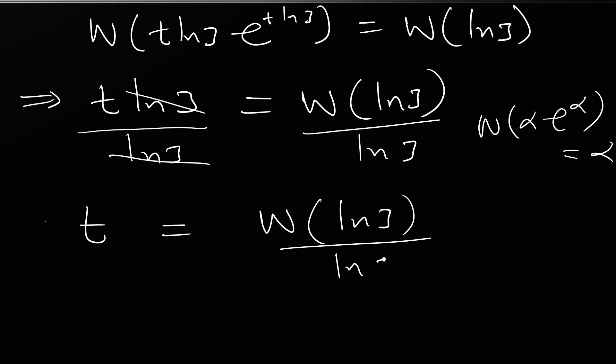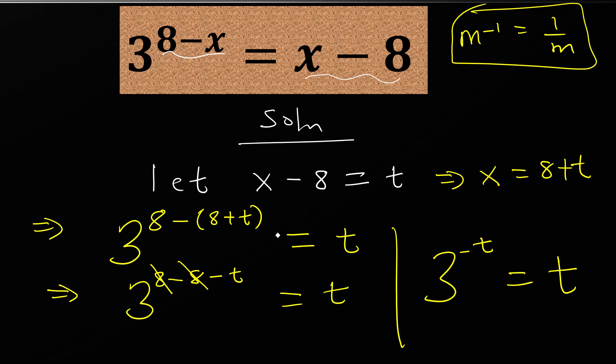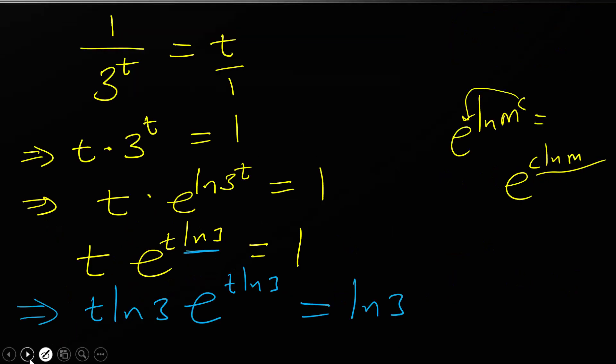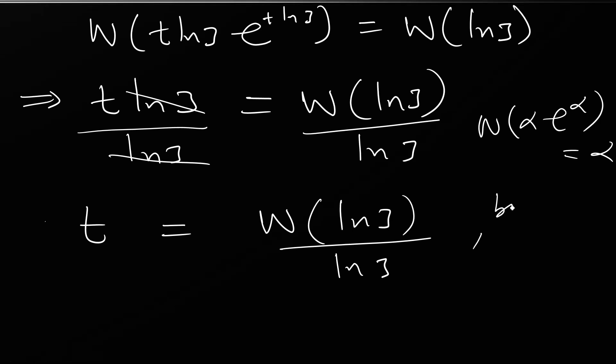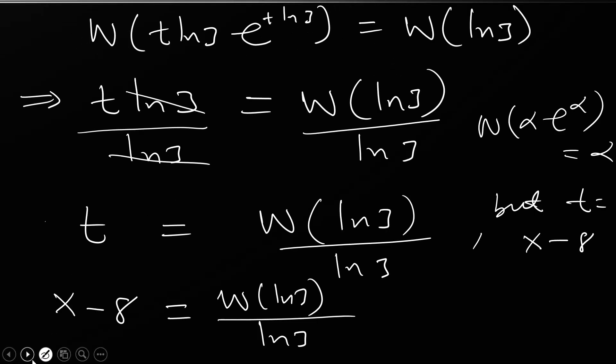We said x minus 8 equals t, and we have t. So x minus 8 equals W function of ln of 3 over ln of 3. Let's add 8 to both sides of the equation. That will be x equals 8 plus W function of ln of 3 over ln of 3. This is the final answer.